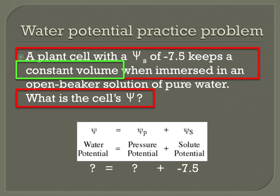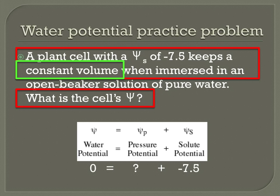The second piece of information is a bit tougher to pick out. The problem states that the cell keeps a constant volume when immersed in solution, meaning there is no net diffusion. Since the water potential of the solution is zero and there is no net movement of water, the solution is in equilibrium, which means the water potential of the cell must also be zero. Since you are left with one unknown variable — the pressure potential of the cell — you can now solve for it. To balance the equation, the pressure potential must be positive 7.5, which is the answer. This sort of pressure could be provided by cell structures such as central vacuoles, which can be filled with water.